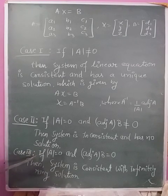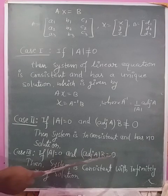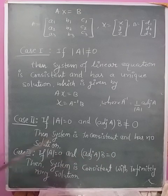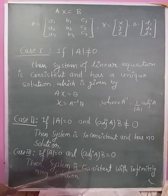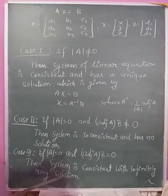Case 3: If determinant of A is 0 and adjoint of A times B is equal to 0 matrix, then the system is consistent with infinitely many solutions.